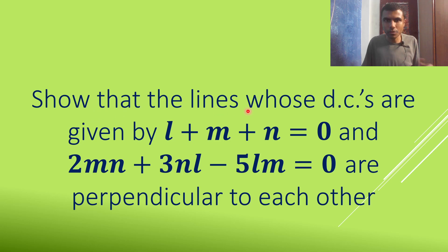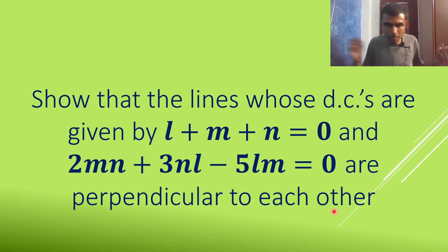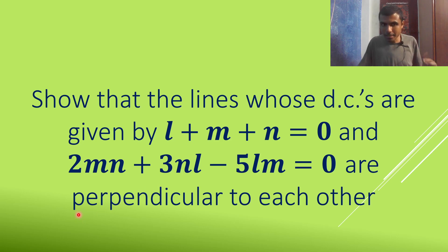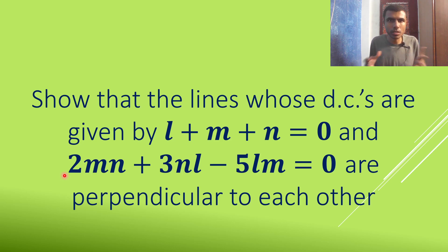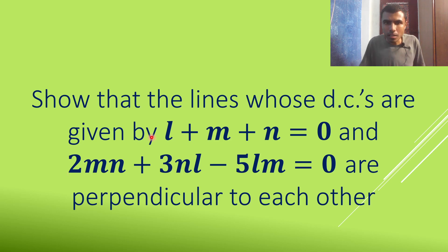Here we have to show that the lines whose Direction Cosines (DCs) are given by these two equations, and we have to show that they are perpendicular to each other. This question is a little different from our usual DCs and DRs problems — if you try to factorize it, it will not get factored. I'll show you.